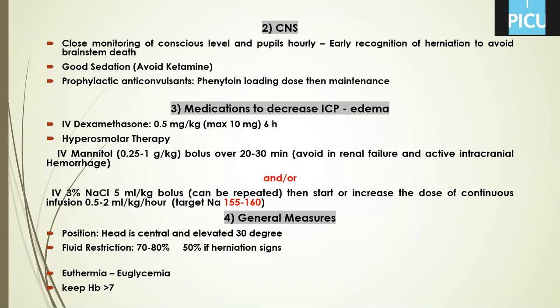Target sodium is 155 to 160. Mannitol is an osmotic diuretic and requires normal kidney function, so avoid it in adrenal failure and active intracranial hemorrhage. We may use mannitol, hypertonic saline, or both. General measures: keep head central and elevated 30 degrees, fluid restriction to 70 to 80% if the patient is not hypovolemic or septic — reduce to 50% if herniation is suspected. Maintain normothermia, normoglycemia, and hemoglobin above 7.